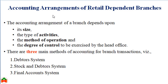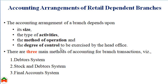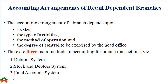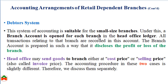The accounting arrangement of retail dependent branches depends on the size of the branch, types of activities, method of operations, and the degree of control exercised by the head office. There are three main methods of accounting for branch transactions: the first is the debtor system, the second is the stock and debtor system, and the third is the final account system. The debtor system is suitable whenever the size of the branch is small.